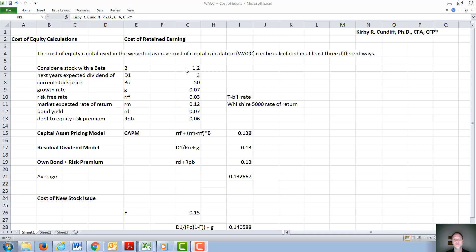Consider a stock with a beta of 1.2, next year's expected dividend, D1, of $3 per share, a current stock price, P0, of $50, a growth rate, G, in the dividend of 7%.